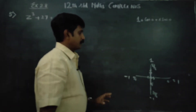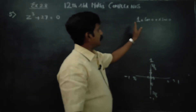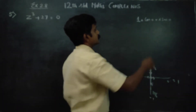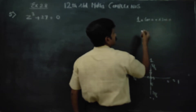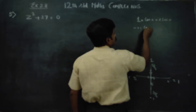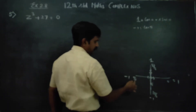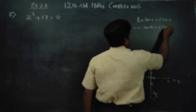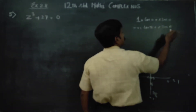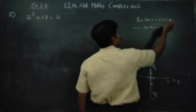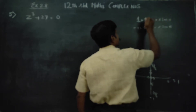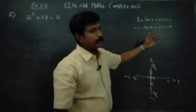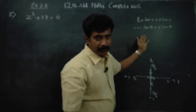So, the ready-made polar forms I use are: for 1, it is cos0 plus i sin0. For minus 1, it is cosπ plus i sinπ, because cosπ is minus 1 and sinπ is 0, and sin0 is 0. These are the ready-made polar forms for 1 and minus 1.